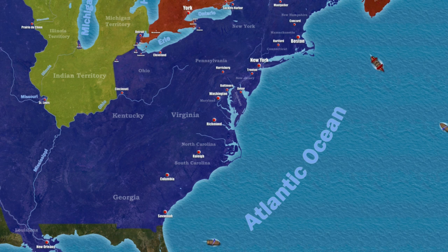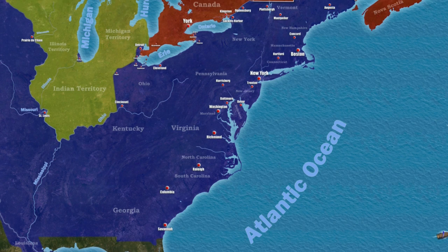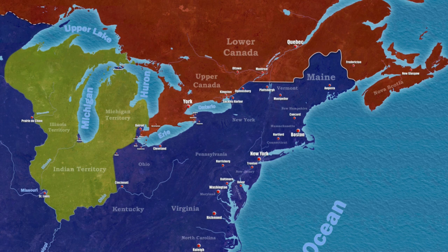This situation did not suit France or the United States. After the next elections, supporters of war won the majority in the American Congress. Their main goals were not only to stop the seizure of American ships by the British, but also to expand the territory of the United States at the expense of Canada. On June 18, 1812, war was declared on the British Empire.